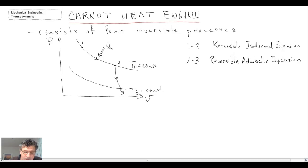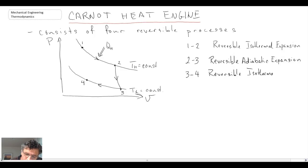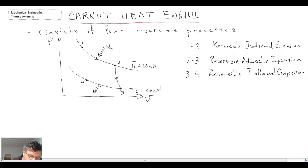The next step is an isothermal compression process taking us from state three up to state four. When we compress a gas it usually gets hotter, so this is reversible isothermal compression. In order for it to be isothermal, we need to reject heat to the environment, and that becomes Q subscript L.